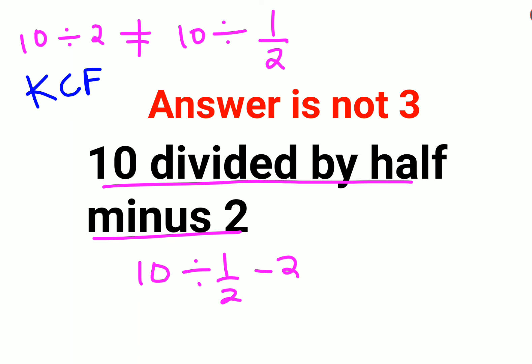K stands for keeping the first number as it is. C stands for changing the division sign to multiplication. And F stands for flipping or taking the reciprocal of the next number. So reciprocal of 1 upon 2 is 2, and minus 2.